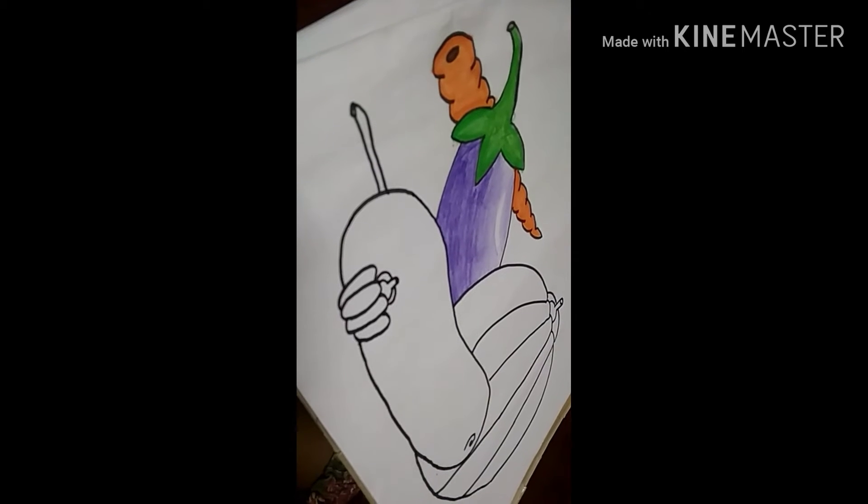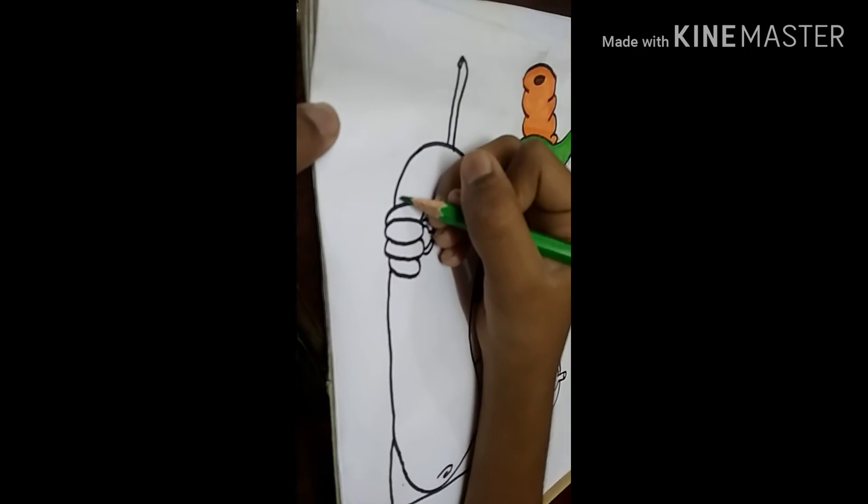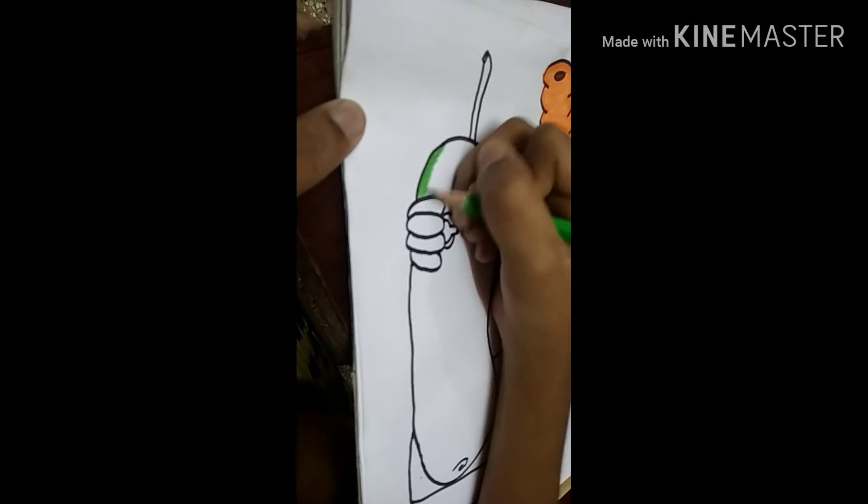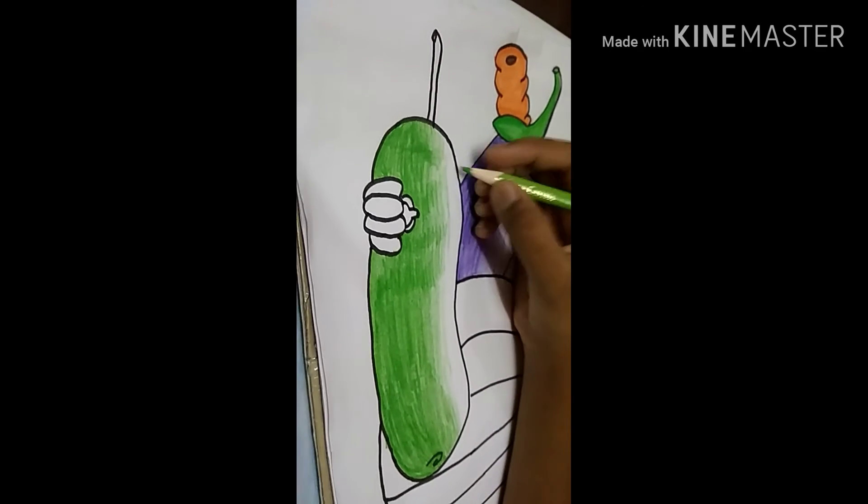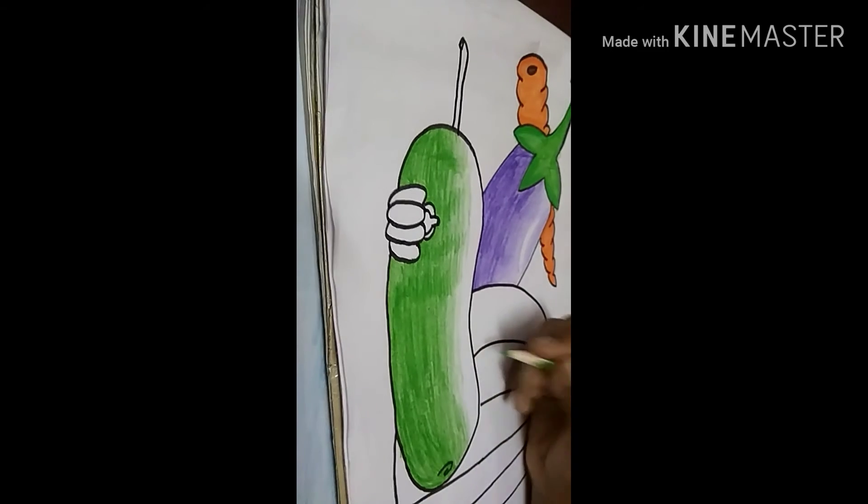Now let's color the bottle guard with light green. Leave some space at the top and color it with lemon green.